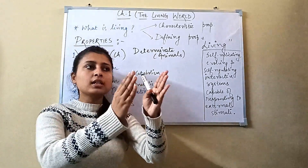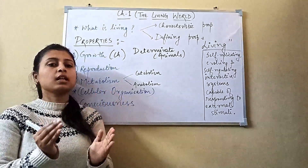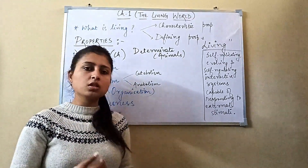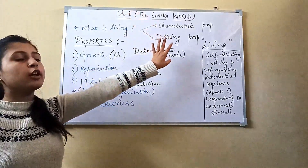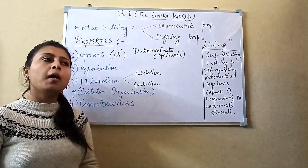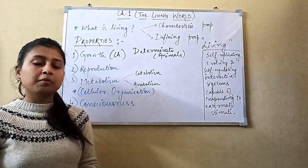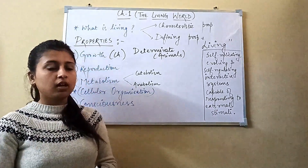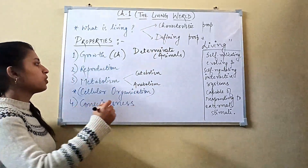In higher organisms, growth and reproduction are different phenomena — they do not depend on each other. Now, is reproduction a defining or characteristic property? We know that some living organisms are sterile — for example, mules, or humans who are unable to produce sperm or ovum. Yet they are still living. So reproduction is not a defining property, but it can be a characteristic property of living organisms.